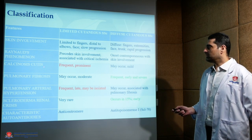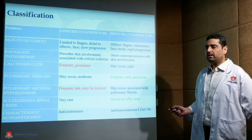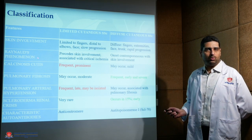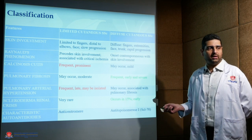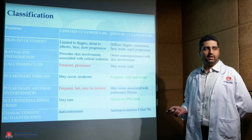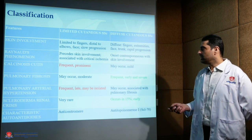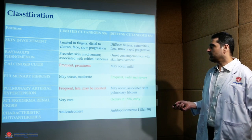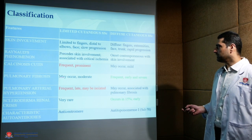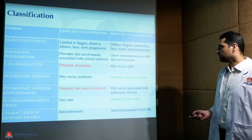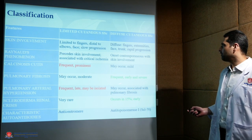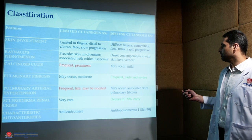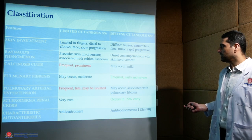Calcinosis and pulmonary arterial hypertension are more common in the limited variant, while renal involvement and CNS involvement are more common in the diffuse variant. Pulmonary fibrosis is again more frequent in the diffuse cutaneous variant.